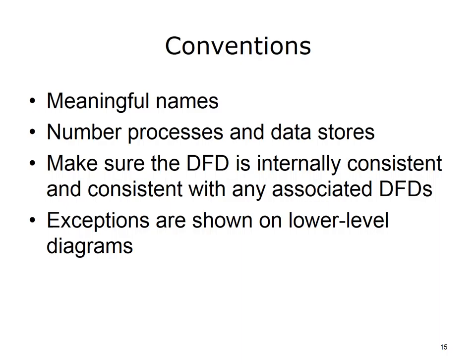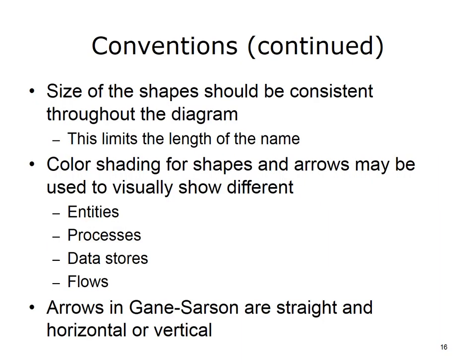Gane-Sarson conventions include: choosing meaningful names for processes, flows, stores, and terminators; numbering the processes and data stores; making sure the DFD is internally consistent and consistent with any associated DFDs; and showing exceptions and error handling on lower level diagrams. The size of shapes should be consistent throughout the diagram, meaning process names need to be short enough to fit in the box or may be abbreviated. There is no guidance on color shading for shapes or arrows, as the notation was developed in the 1970s when color was not commonly used.